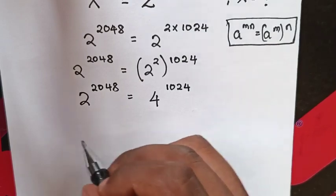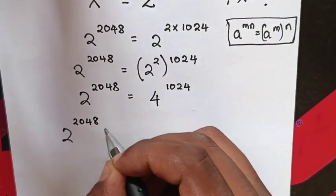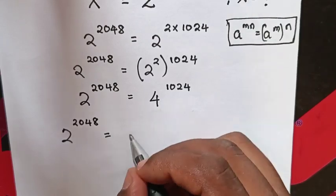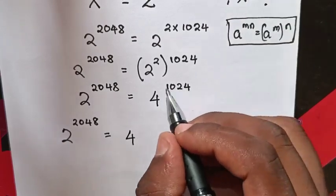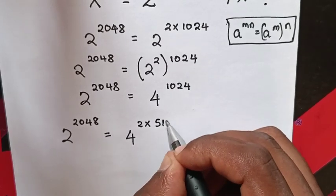Then 2^2048 equals 4, here divided by 2 in the exponent, which is 4^(2×512).